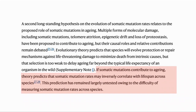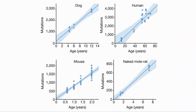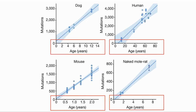If somatic mutations contribute to aging, the theory would predict that the mutation rate would be inversely related to lifespan across species. Here are graphs for dogs, humans, mice, and naked mole rats showing age against number of mutations. Firstly, we can see that they accumulate linearly over time. The study also looked at the nature of the mutations and found that they were similar across species. The maximum age varies greatly — from two years for a mouse to 80 years for a human — however, the number of mutations per cell has a much smaller range. Note that it shows 800 for the naked mole rat, but this is at an age of eight years where they have an average lifespan of closer to 25.